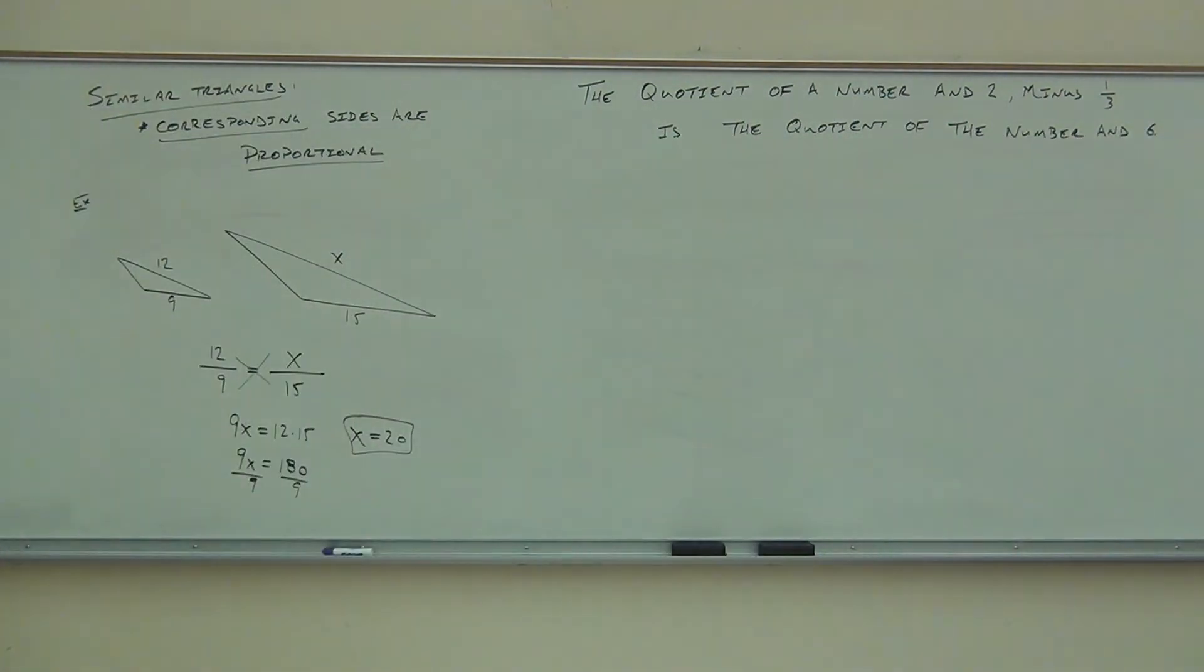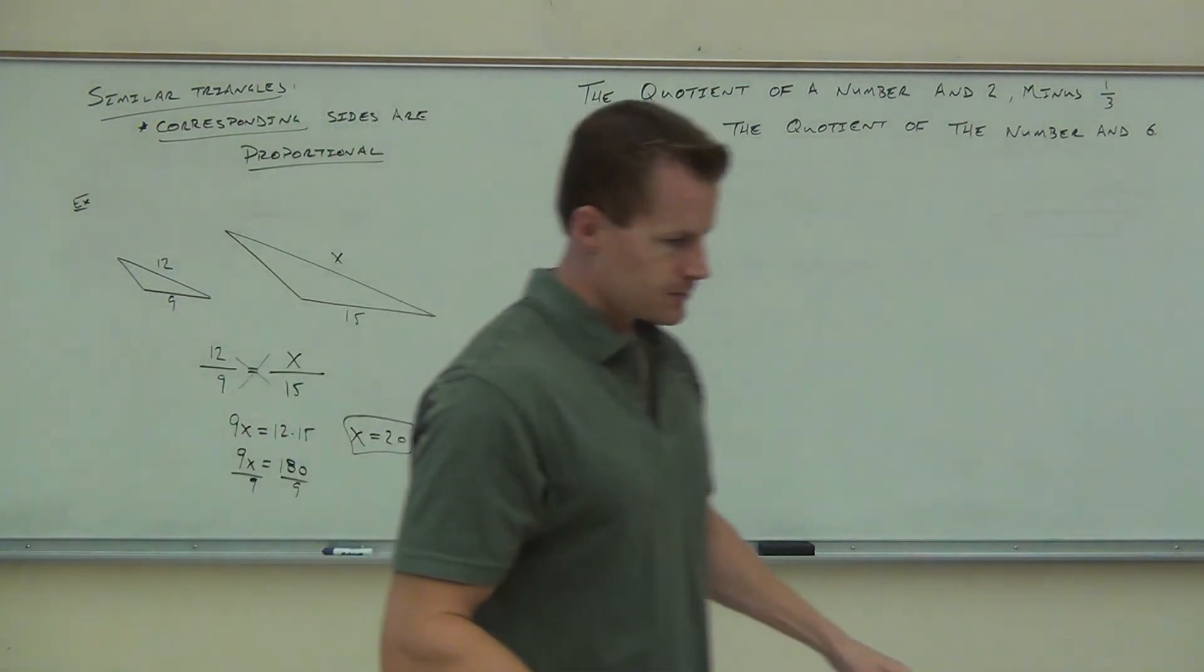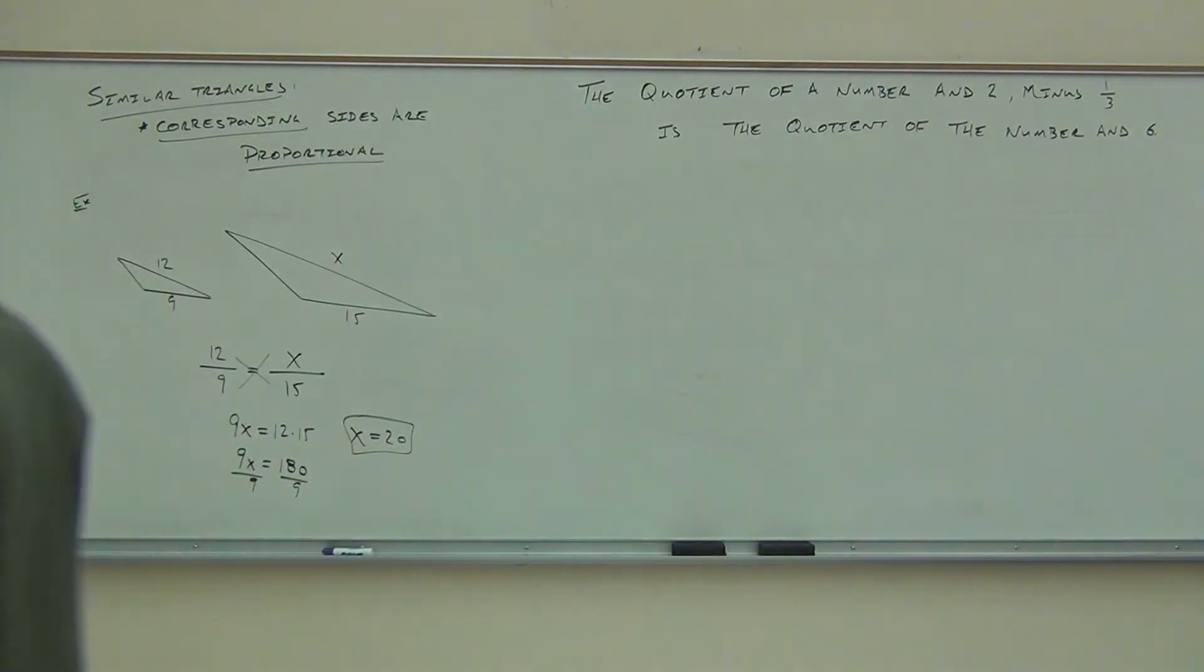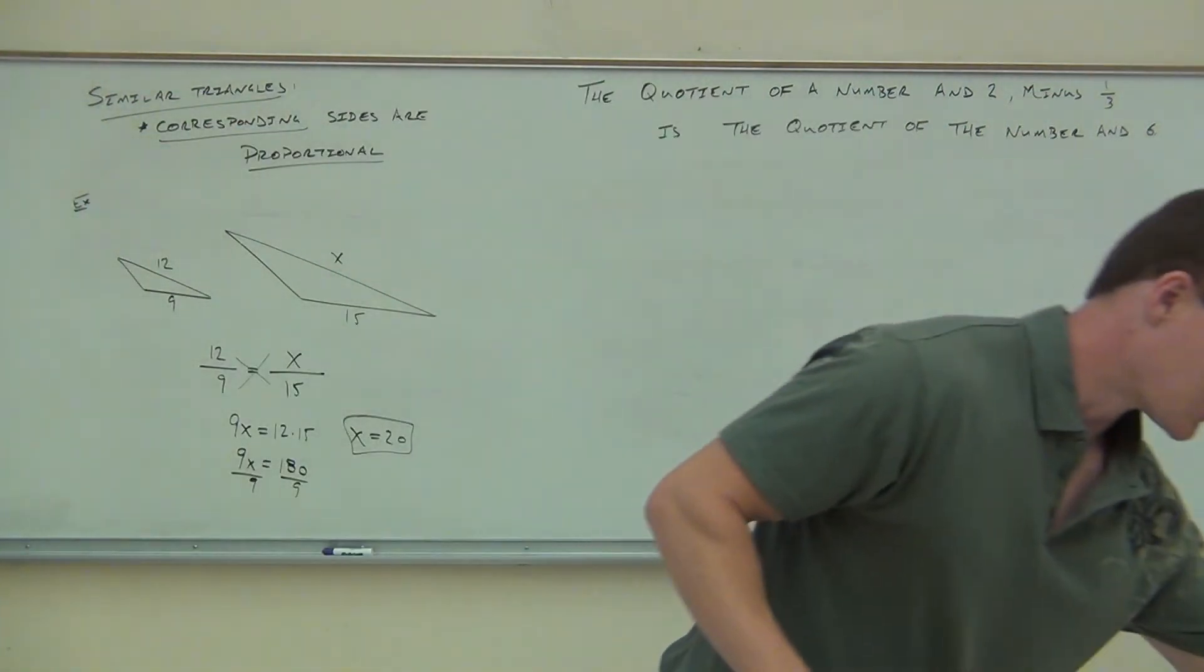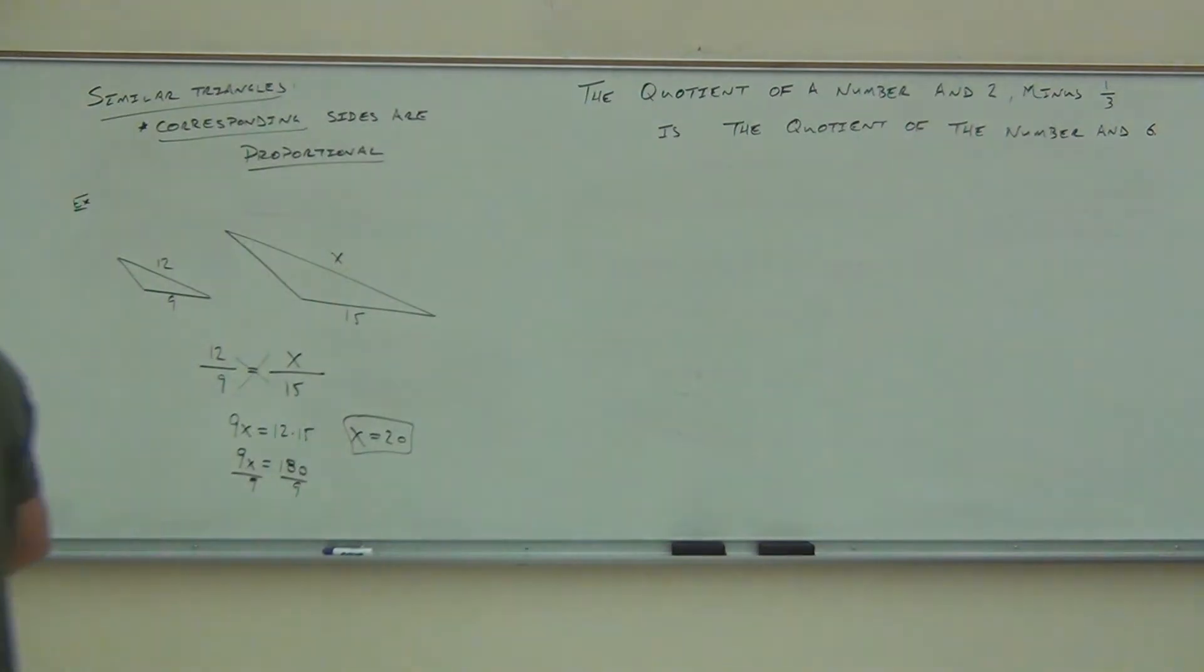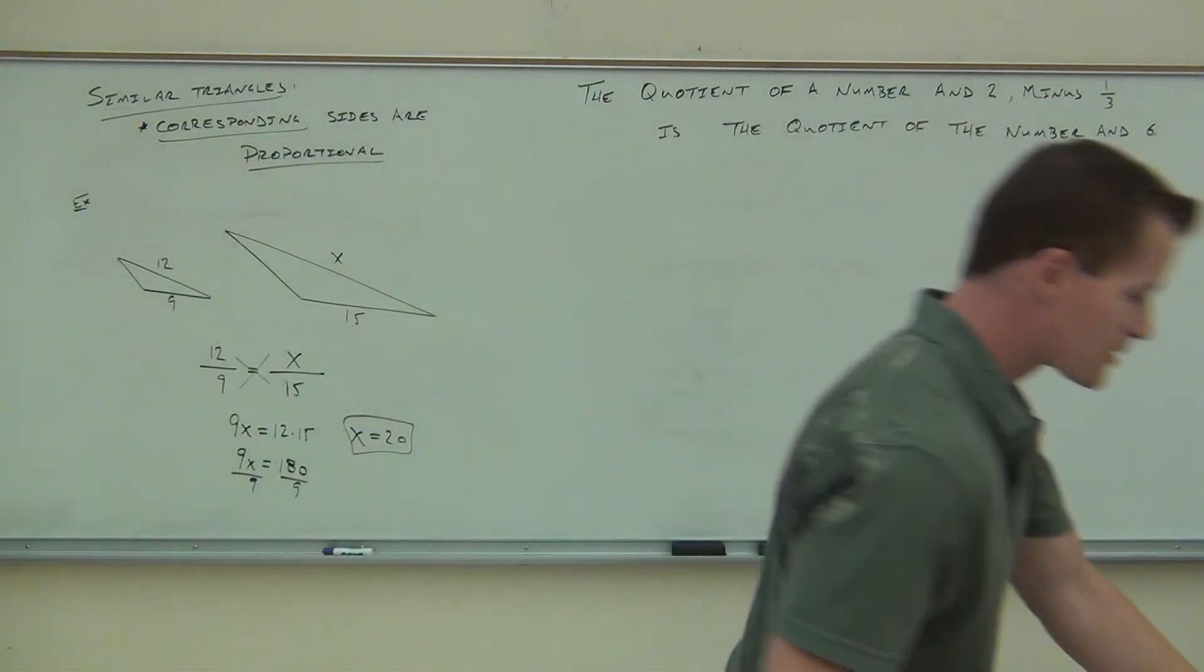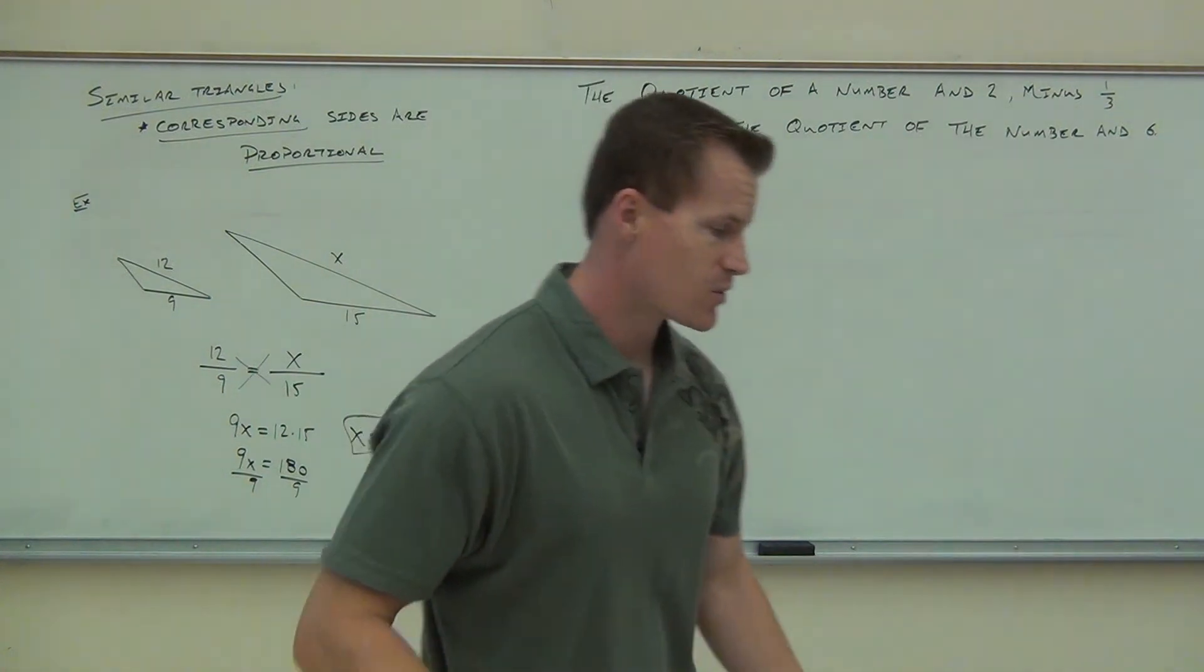Oh, here's some homework. Get this passed around really fast, okay? Oh, here's your roll sheet. Get this passed around really fast, okay? Here's another homework. Get this passed around really fast, okay? Make sure that gets fast. Okay, the quotient of a number and two minus one-third is the quotient of a number and six.